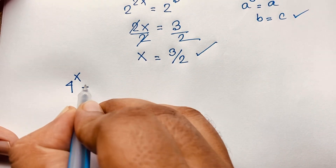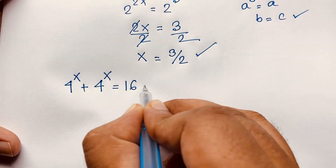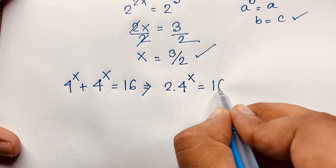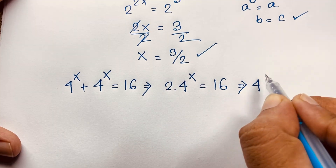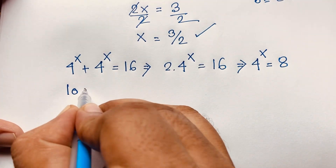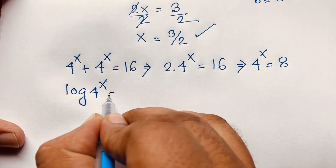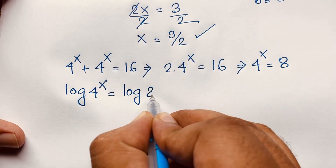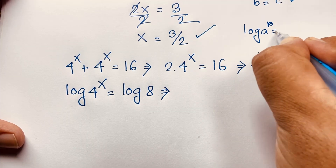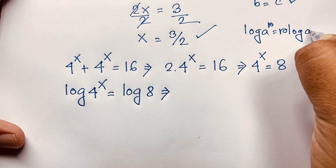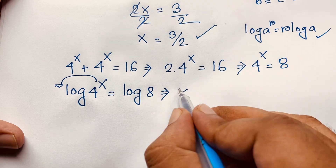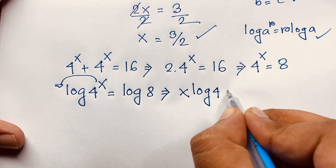Now I will solve this question using another method. We have 4 to the power x plus 4 to the power x is equal to 16, which gives 2 times 4 to the power x is equal to 16. Dividing both sides by 2, we get 4 to the power x is equal to 8. Now I apply the natural log to both sides: log(4 to the power x) is equal to log 8. Using the log power rule, log(a to the power r) equals r times log a, the exponent moves in front.